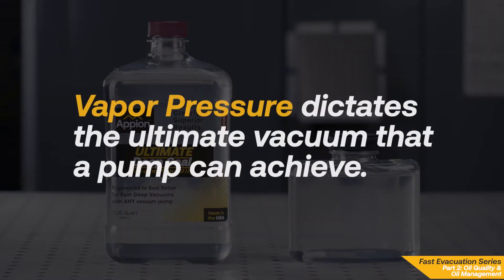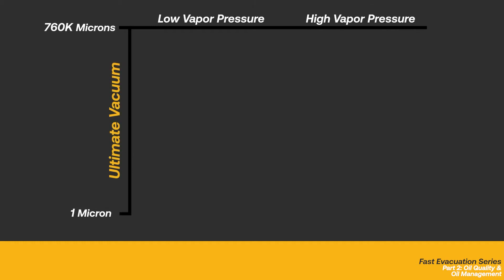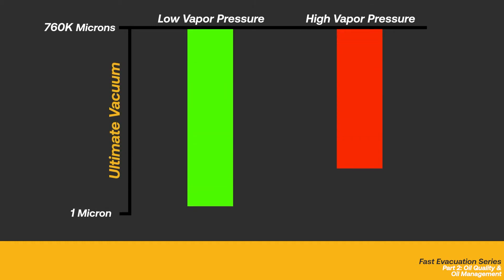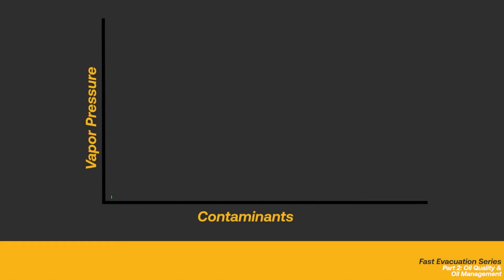The vapor pressure of a vacuum pump oil is important because it dictates the ultimate vacuum a pump can achieve. A vacuum pump oil with a high vapor pressure will vaporize when exposed to a vacuum. The vaporized oil inhibits the pump's sealing ability and raises the ultimate vacuum of the pump. Additionally, moisture and contaminants introduced into the oil during an evacuation will raise the vapor pressure of the oil.